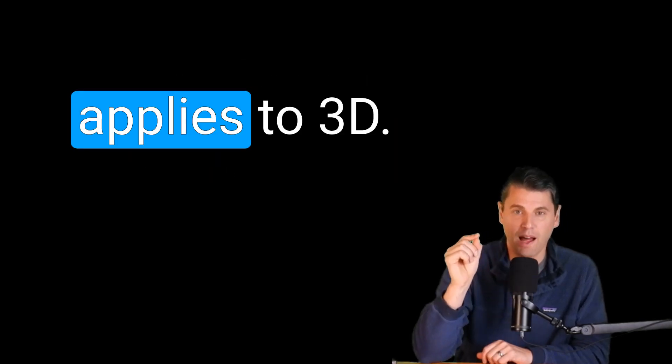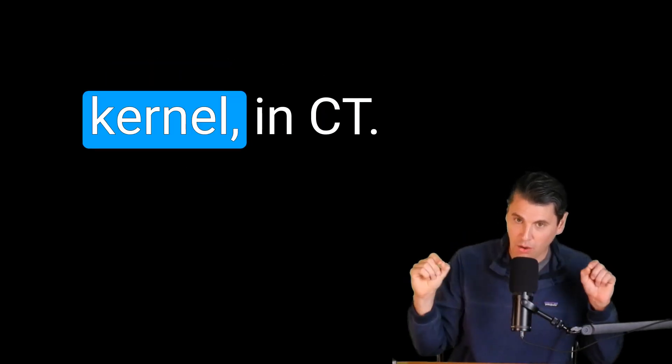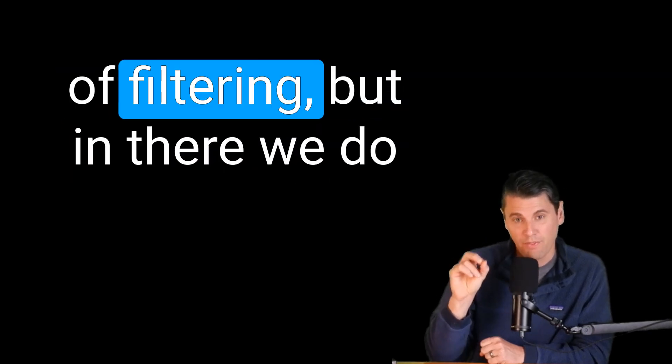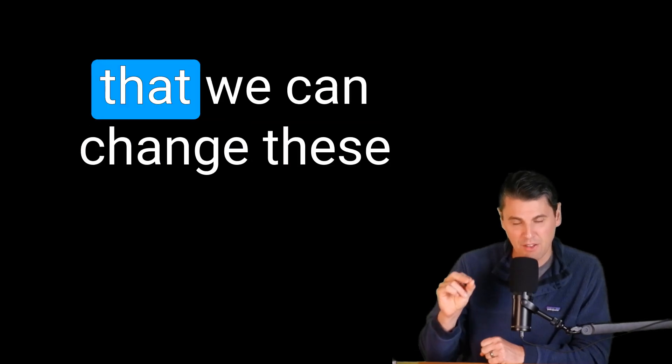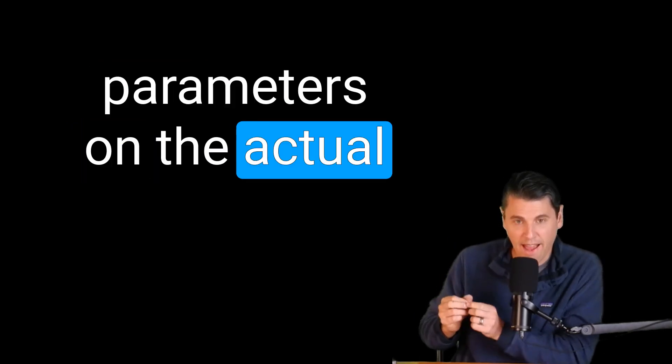Next, see how that applies to a 1D, what we call kernel in CT. We want to get the same kind of filtering, but in there we do it on the data space such that we can change these parameters on the actual raw data. When the image comes out, it's going to have these different inherent properties. Coming up next at How Radiology Works.